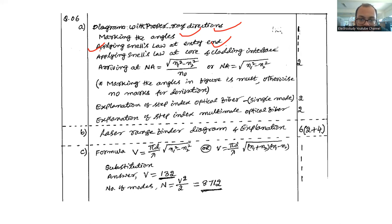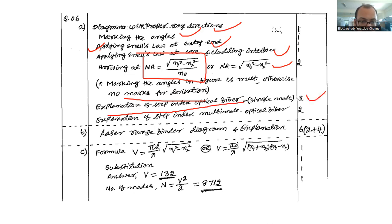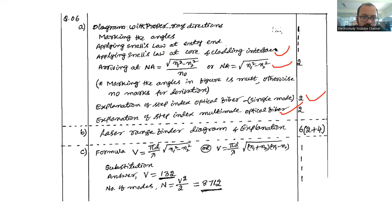Using different parts — core, cladding — you will ultimately derive the expression: NA = √(n1² − n2²)/n0, or simply √(n1² − n2²) depending on the literature. Marking the angles in the figure is essential; otherwise no marks will be given for the derivation. Then explain step-index single mode and step-index multi-mode fibers. The difference is only in the value — it is straightforward.